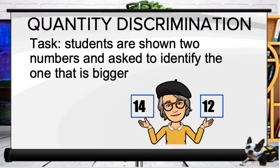The next early numeracy CBM is quantity discrimination. For this, students are shown two different numbers and asked to identify which one is bigger. Let's look at an example.